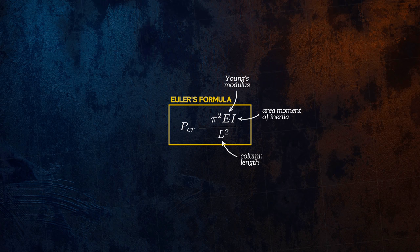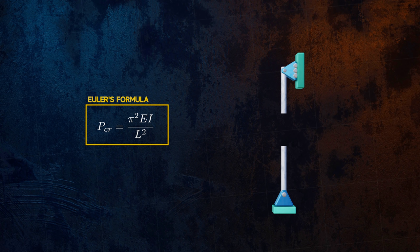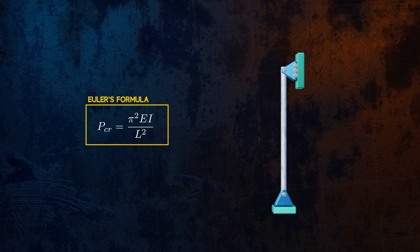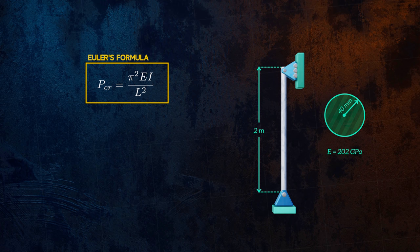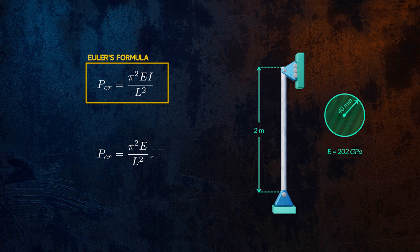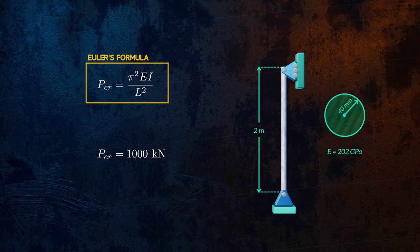This form of the equation is valid for a column that is pinned at both ends, meaning that the ends can rotate but can't translate horizontally. So, a 2m tall steel column that has a circular cross section with a radius of 40mm would be expected to be able to support a load of around 1000 kN before buckling, not including any safety factors.